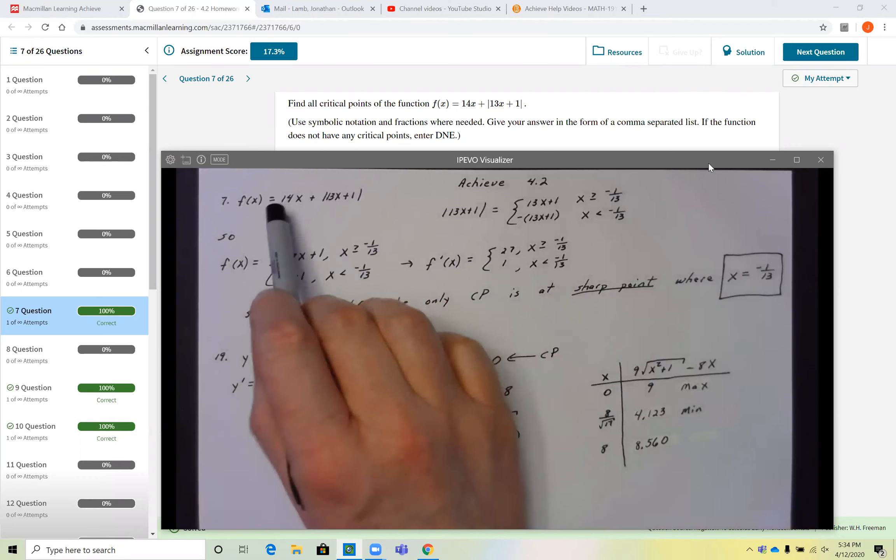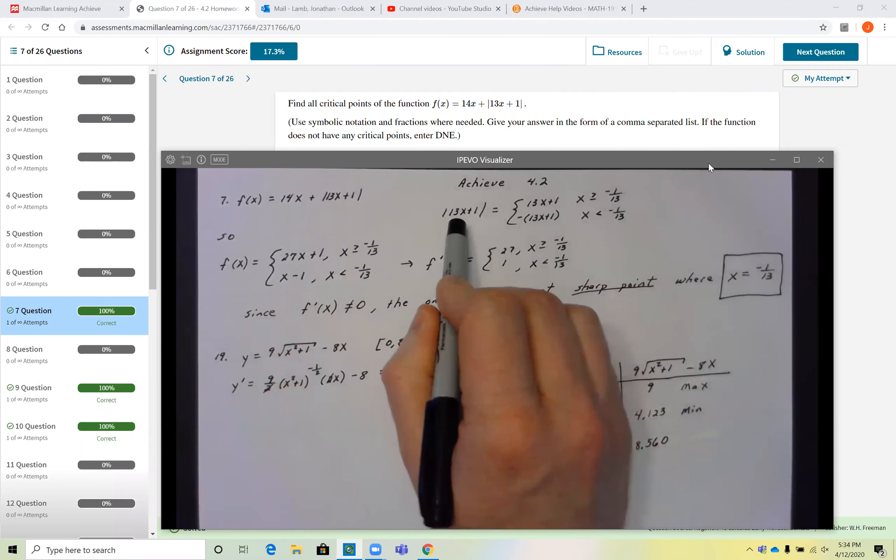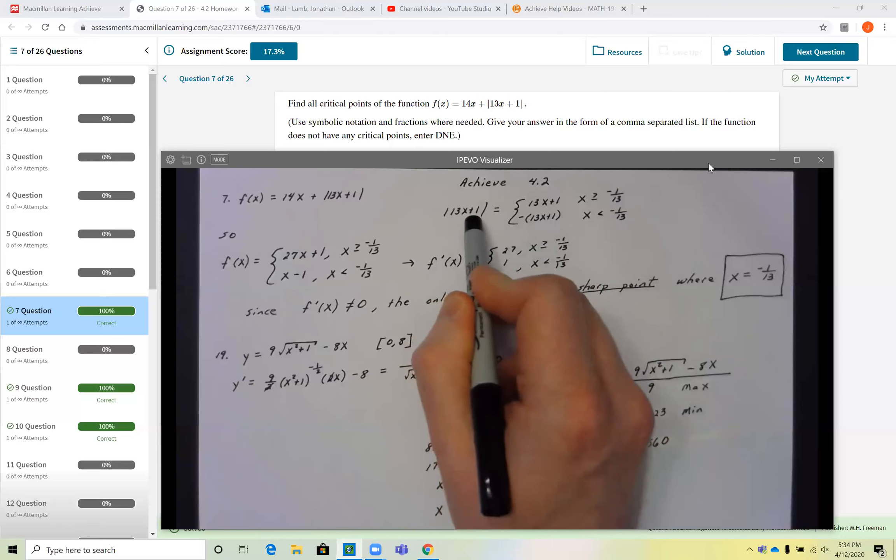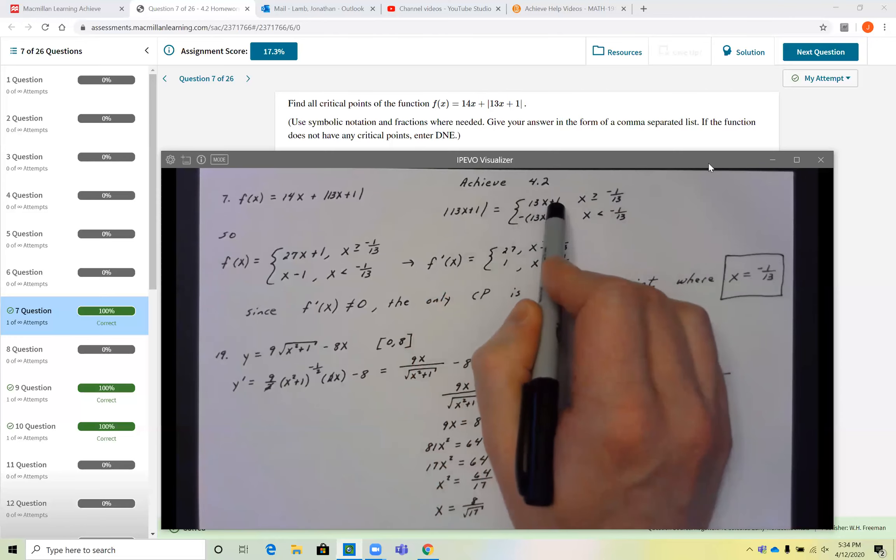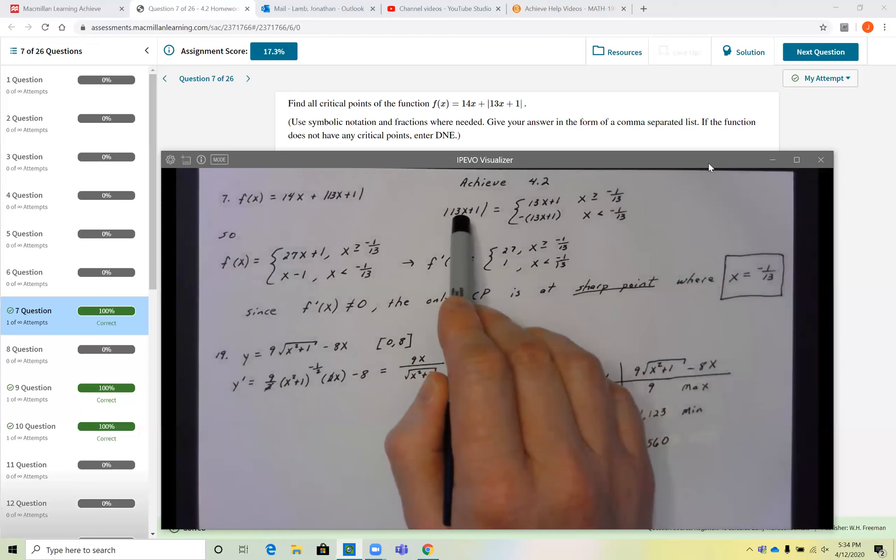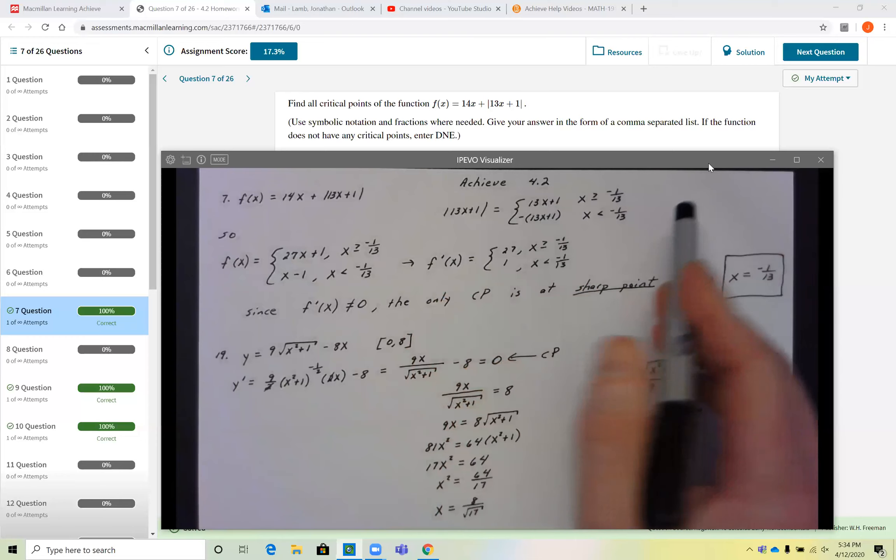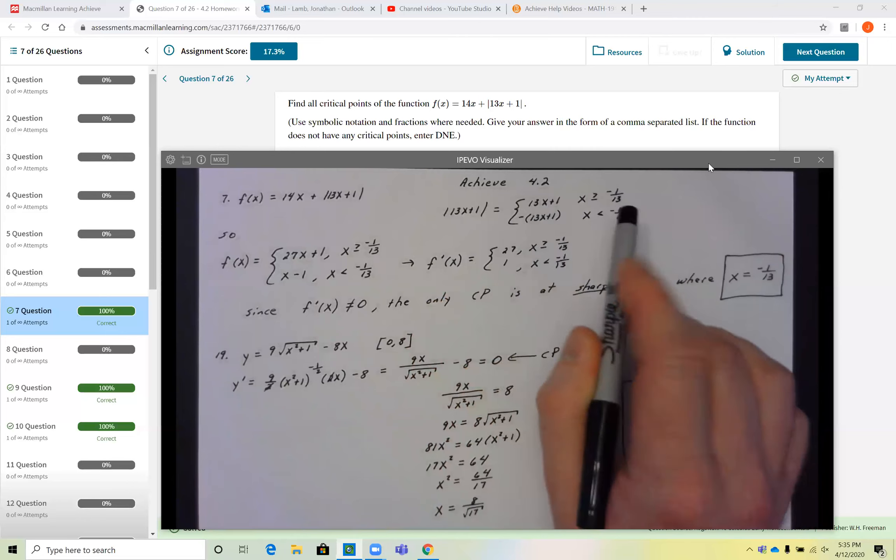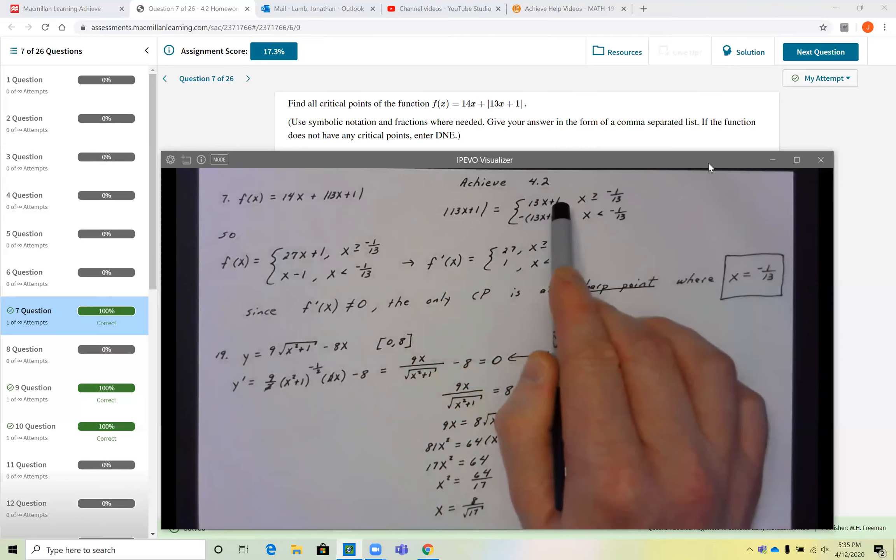So anytime you have an absolute value in there, mine is 14x plus the absolute value of 13x plus 1, we know absolute values are always piecewise defined functions. So the absolute value of 13x plus 1 is merely 13x plus 1 anytime x is greater than or equal to negative 1 over 13. But that absolute value of 13x plus 1 has to be the negative of the group 13x plus 1 anytime x is a value that would cause the inside to be negative. Well I know at negative 1 over 13, this group is equal to zero. At any number to the right of that, this group is positive, so the absolute value does nothing. Any number to the left of negative 1 over 13, the inside is negative, so the absolute value just acts as the negative on the group.